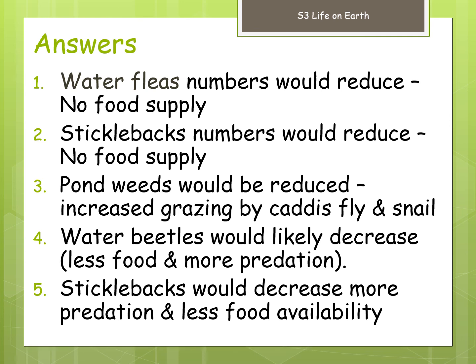A couple of things to think about when looking at food webs: having more than one food supply will likely increase your chances of survival when something like this happens. Number two, there are quite complex relationships in any ecosystem in terms of food webs, so things can have a significant impact even if there's no direct relationship. In normal natural circumstances these things balance out and nature finds a balance. The problem comes from humans, who normally cause the major problems within ecosystems when they remove things, causing massive disruptions in the food web.